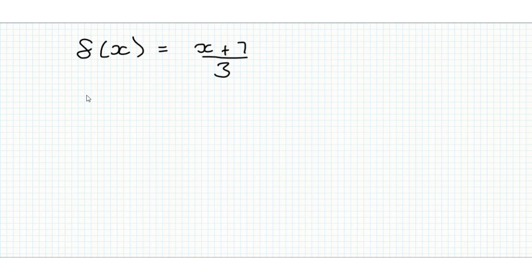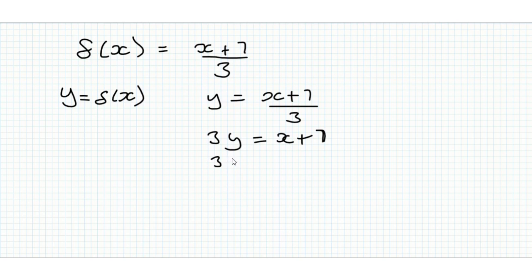And that is, we set y is equal to f of x, and then we rearrange so that we've got x as a function of y. We'll see that now. So if we take y is equal to x plus 7 over 3, that implies 3y is equal to x plus 7, and that gives us 3y minus 7 is equal to x.